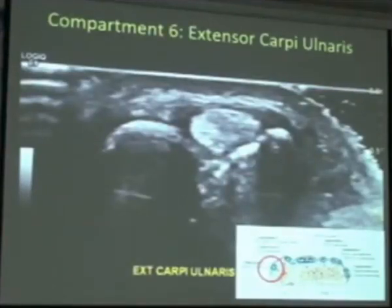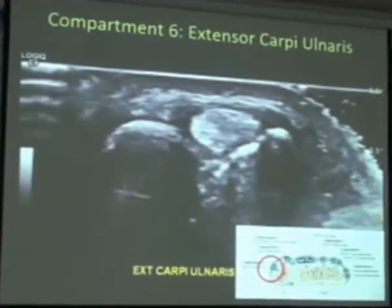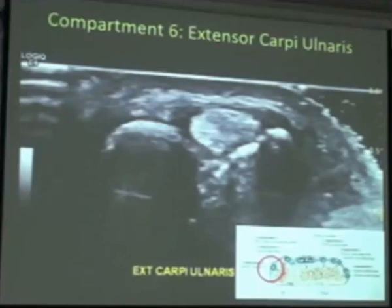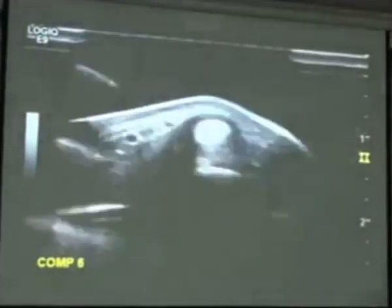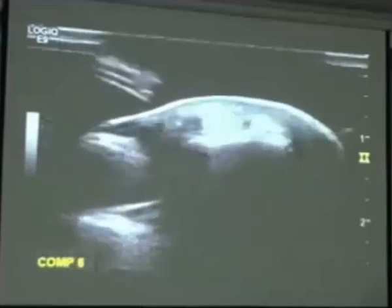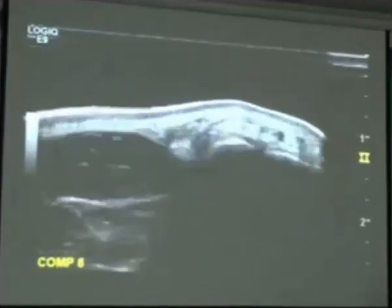Moving across to compartment six, which is extensor carpi ulnaris, coursing down on the ulnar aspect of the distal wrist. It can be affected by tenosynovitis or instability due to deficiency in the retinaculum that holds it in place. By utilizing dynamic scanning, we're able to see if this tendon subluxes out of that groove, watching the course of the ECU as it comes down from the distal wrist over the ulnocarpal joint and extending down onto the phalanx.